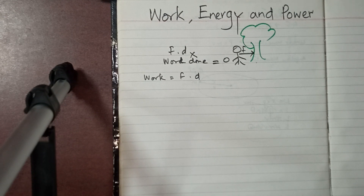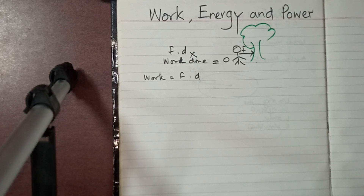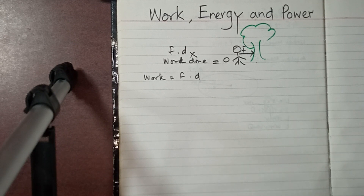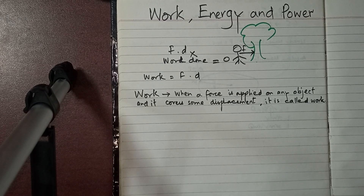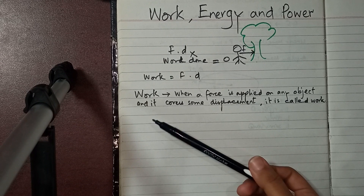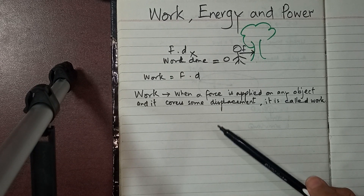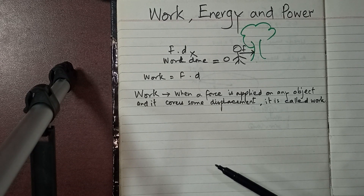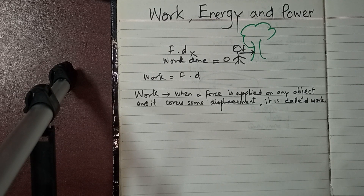As we have learned in the chapter of vectors, work is the dot product of force and displacement. So the definition: work is when a force is applied on any object and it covers displacement, it is called work. In the book, displacement is mentioned in the direction of the force.